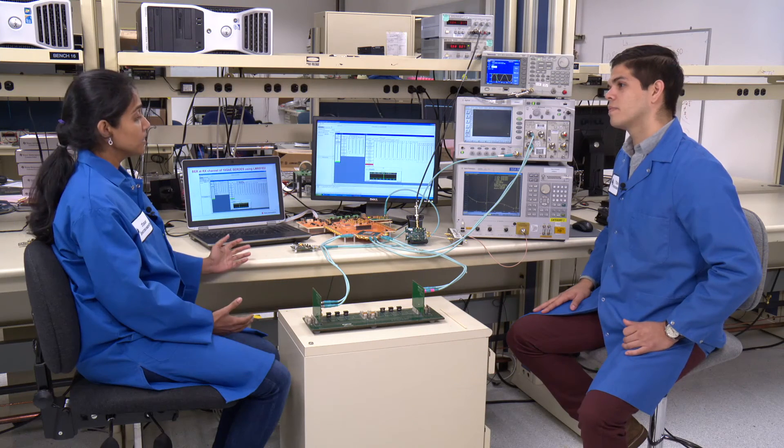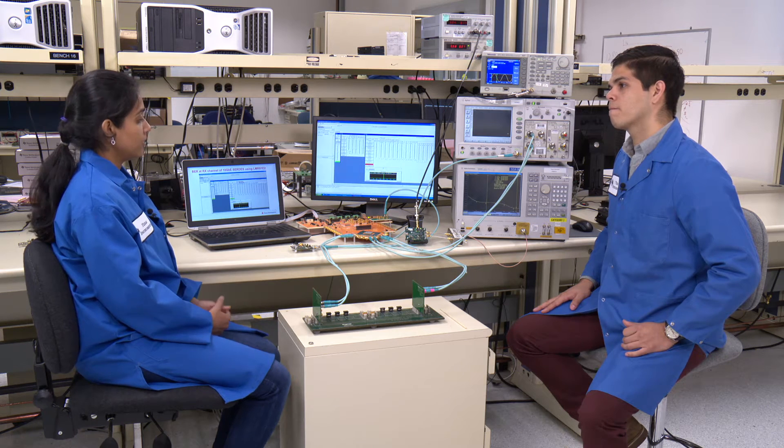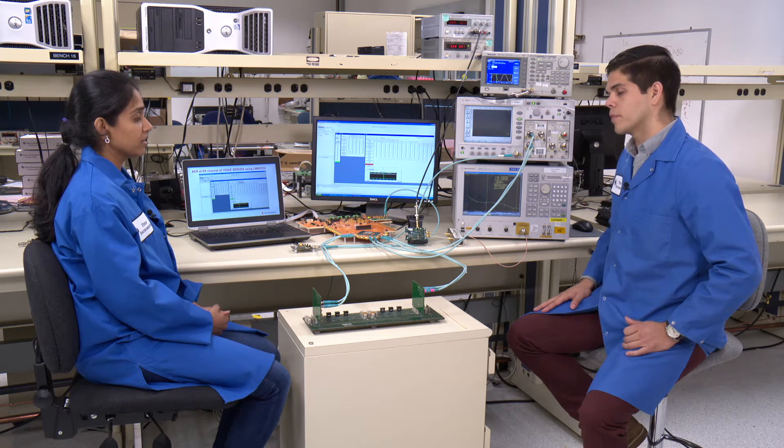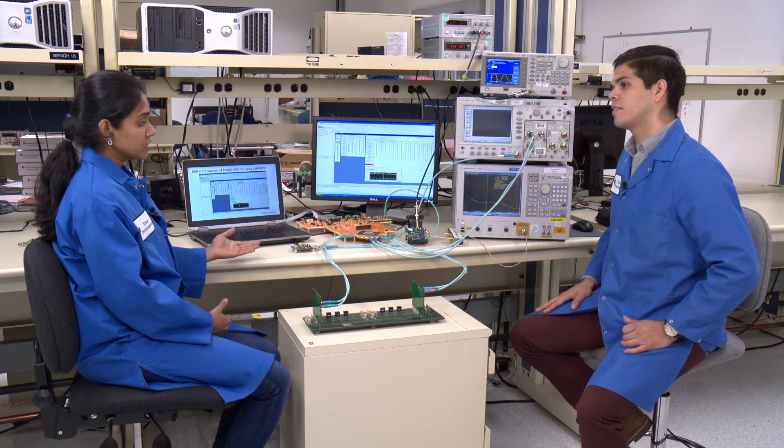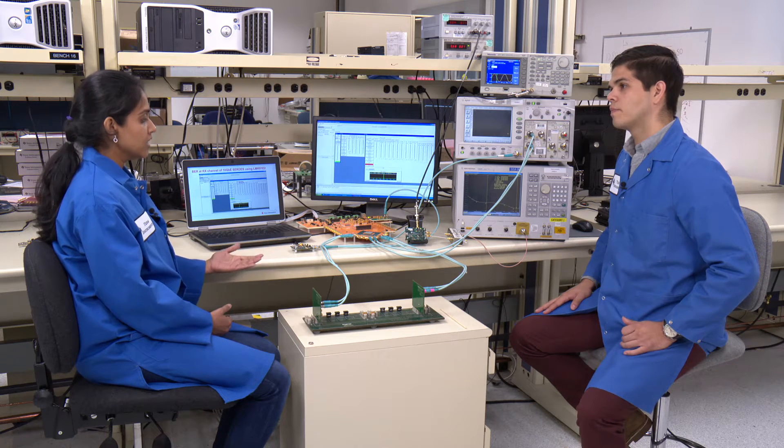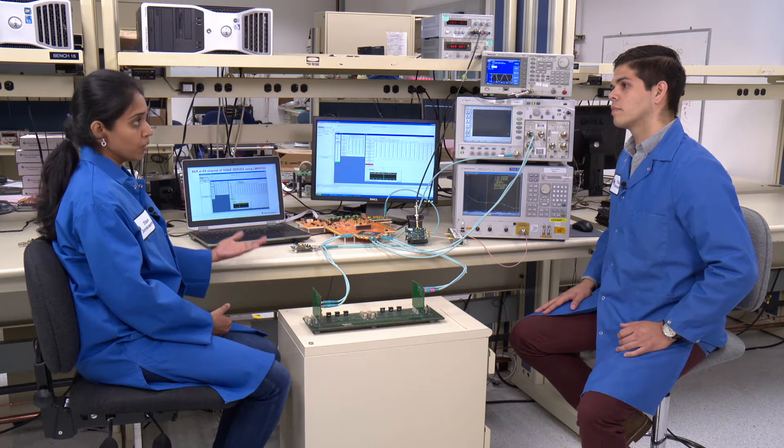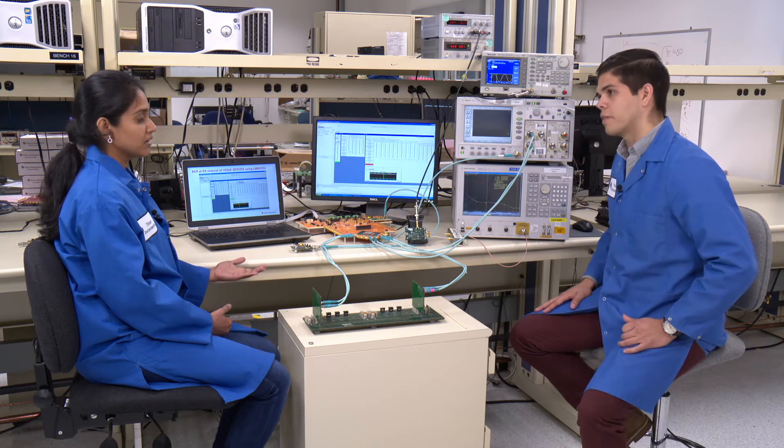That's great, Gabe. So by just merely swapping out the competitor's oscillator, we were able to see about 5x improvement. That's right. And this is a 10-gig link, so as data rates increase to 25 gig, the effect of this low jitter will be even more compounded in terms of a bit error rate improvement.